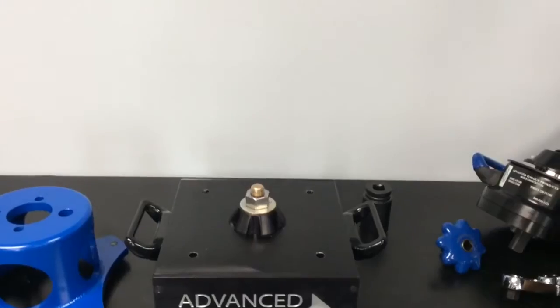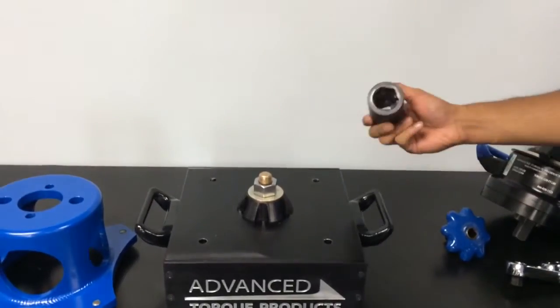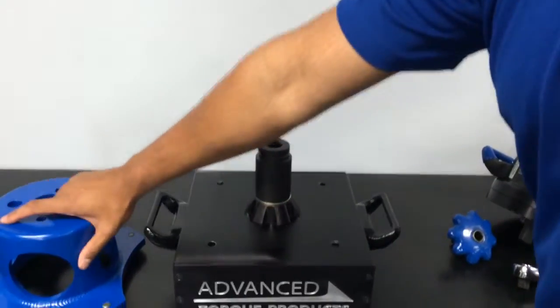Breakaway will be done in the same way as tightening, only in the opposite direction. Once again, place the socket onto the nut.